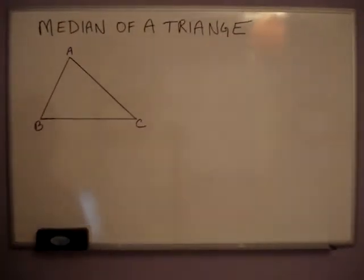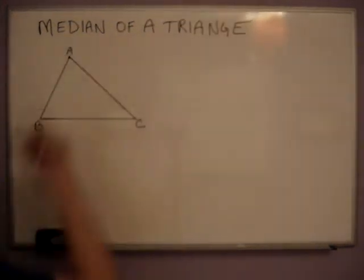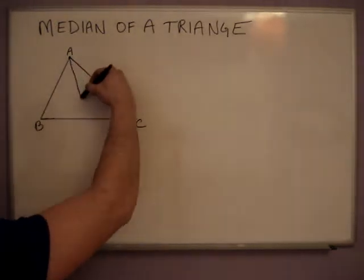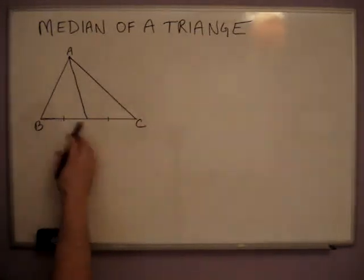I'm going to talk about the median of a triangle. The definition of a median is a line segment that starts off at one vertex of the triangle and comes down as such and separates the line segment across from the vertex right in half.